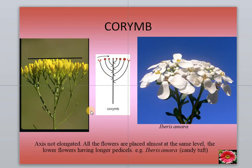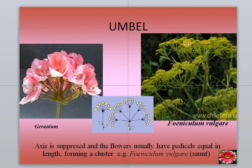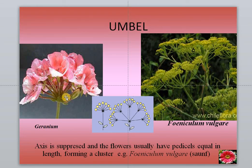This is the corymb inflorescence, as seen in the case of Iberis. Here the terminal bud is smaller, and older flowers are seen towards the periphery. Examples are Iberis amara and Iberis gibraltarica. This is also called a cymose umbel inflorescence. The point from which flowers develop is called shortened or compressed branches. From this point, the flowers develop and the tip contains smaller flowers, producing multiple bunches of flowers from one point.